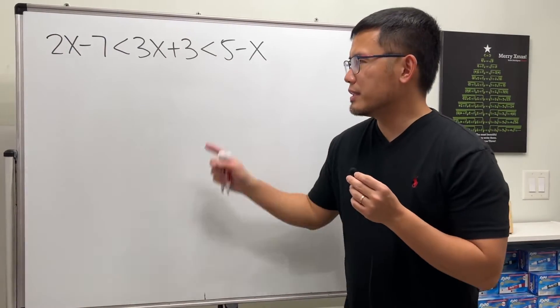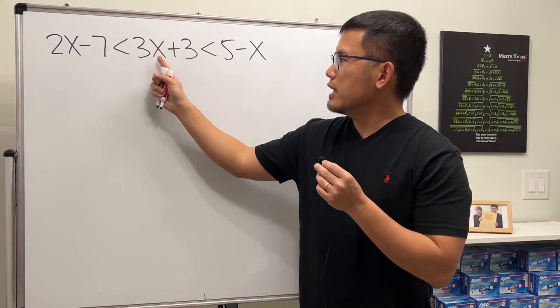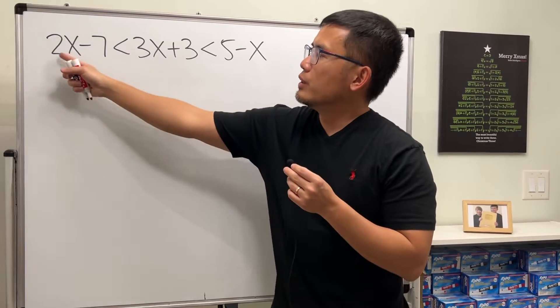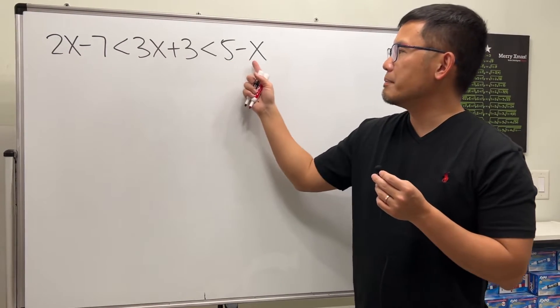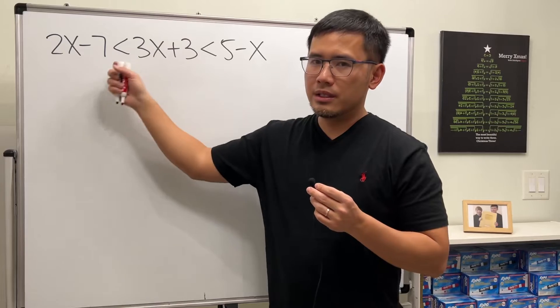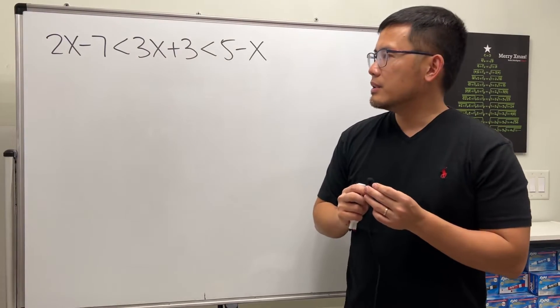Okay, have you ever solved an inequality like this? We see that we have 3x plus 3 that's in between 2x minus 7 and 5 minus x, not including these endpoints, alright? So how do we do it?